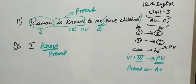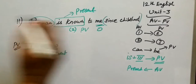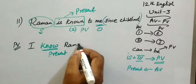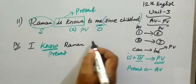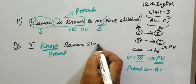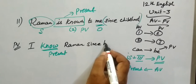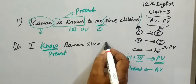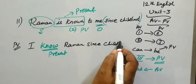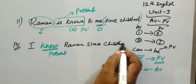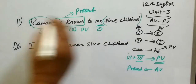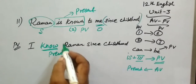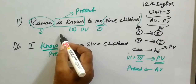Present tense: I know Raman since childhood. The structure is is plus third form. This is the verb. Suppose it is a question — 'is known' versus 'was known.' 'Is known' refers to present tense, 'was known' refers to past tense.